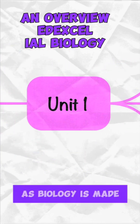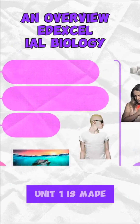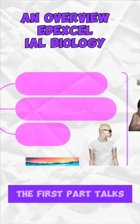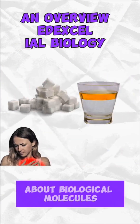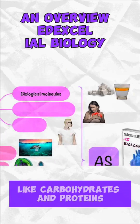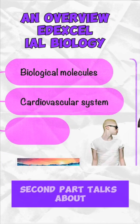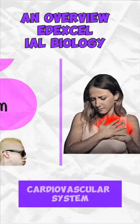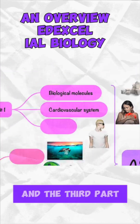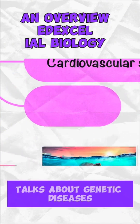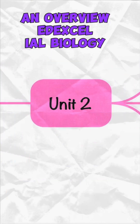AS biology is made up of three units. Unit 1 is made of three parts. The first part talks about biological molecules like carbohydrates and proteins, the second part talks about the cardiovascular system, and the third part talks about genetic diseases and genetics in general.